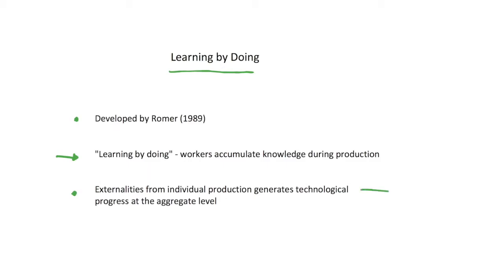Individual firms are just taking their production as given as usual, but they generate some sort of externality. These increases in knowledge and skills will then spill over, and all other firms in the economy will benefit from the knowledge gained by this one firm. We have an externality, and so at the aggregate level we can have increasing returns to scale. That's the thought process behind learning by doing, and we then endogenize the growth of technology in the model through this spillover of knowledge.